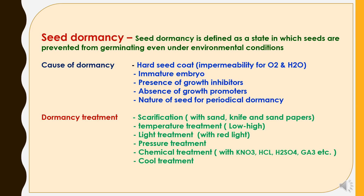Now seed dormancy. Seed dormancy is defined as a state in which seeds are prevented from germinating even under favorable environmental conditions. Causes of dormancy include: hard seed coat having impermeability to oxygen and water; immature embryo; presence of growth inhibitors; absence of growth promoters; and the nature of seeds for periodical dormancy. Treatments for dormancy include: scarification with sand, knife or sandpaper; temperature treatment with low or high temperature ranges; light treatment with red light; pressure treatment; and chemical treatment with potassium nitrate, hydrochloric acid, H₂SO₄, or gibberellic acid.